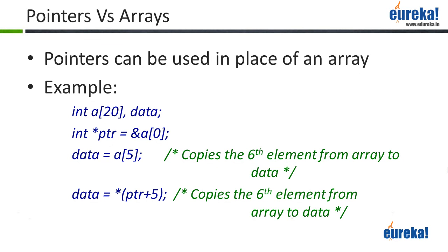You need to remember one thing: pointers can always be used in place of an array. If I have an array A of 20, I don't have to access the data only using the variable A. If I want to access the fifth element, I could say A[6], or the fourth element, A[5]. That is one way. But I can also access the entire array using a single pointer — we're going to see how we can do that.